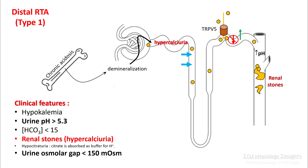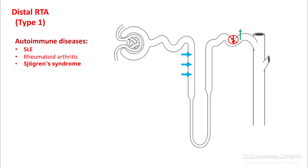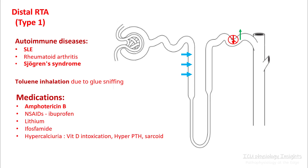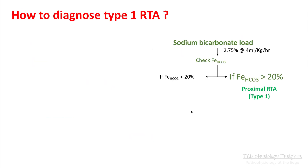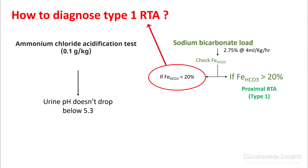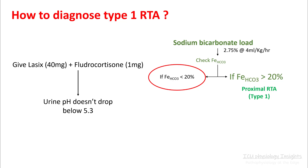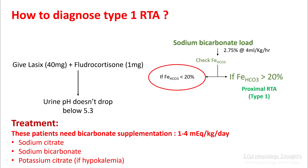Renal stones are a hallmark of distal RTA — unlike proximal RTA where there is an osmotic diuretic response, in distal RTA your urinary pH is much more alkaline, acting as a nidus for stone formation. Other clinical features include hypokalemia, urine pH more than 5.3, bicarb less than 15, hypocitraturia, and urine osmolar gap less than 150. Distal RTA is caused mostly by autoimmune diseases such as rheumatoid arthritis, Sjögren's syndrome, and lupus. Toluene inhalation from glue sniffing is also a cause. Medications such as amphotericin B and ibuprofen are commonly involved — remember amphotericin B, as medical boards are very fond of asking this. To diagnose type 1 RTA, give a sodium bicarb load and fractional excretion of bicarb will be less than 20%. To confirm, give an ammonium chloride acidification test — urine pH will not drop below 5.3. Instead of ammonium chloride, you can use furosemide and fludrocortisone for the same effect. Treatment includes bicarb supplementation, lower than in type 2 RTAs, around 1 to 4 mEq per day.